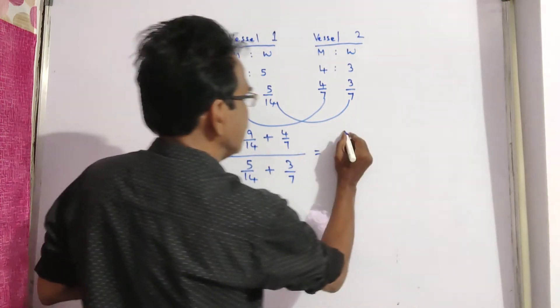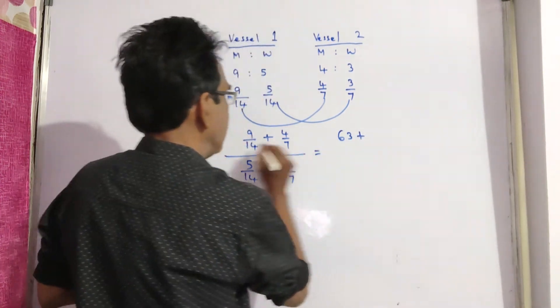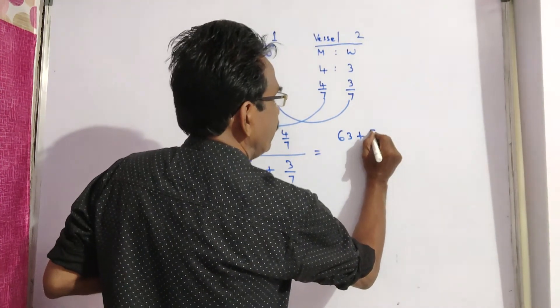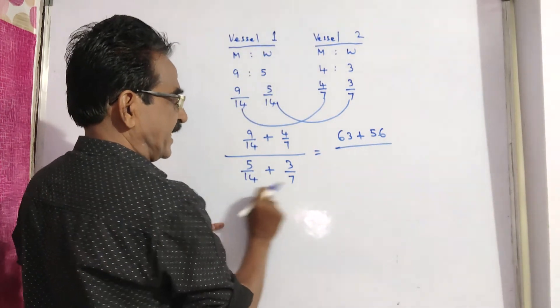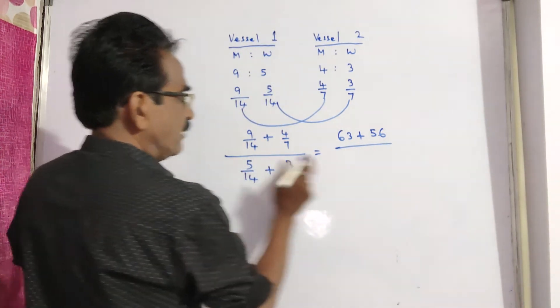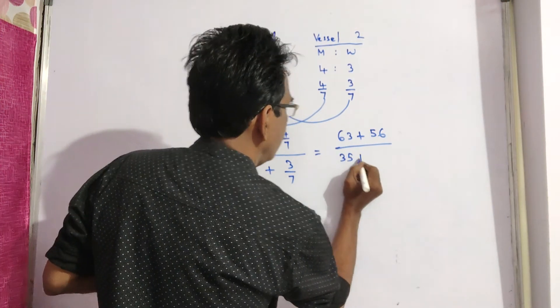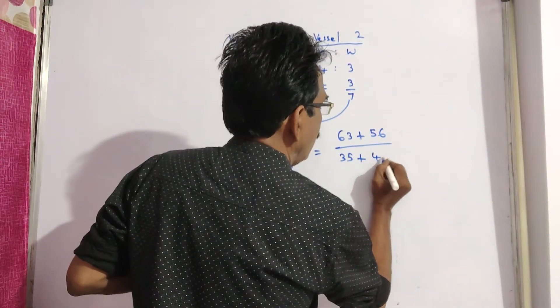This is equal to 9 times 7, 63 plus 14 times 4 is 56, by 98. 98 anyway gets cancelled, I am not doing that. 7 times 5 is 35 plus 14 times 3 is 42.